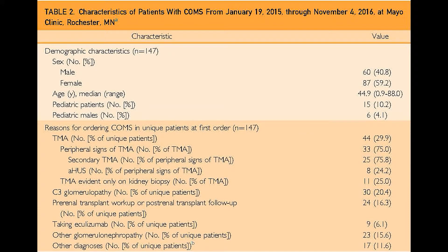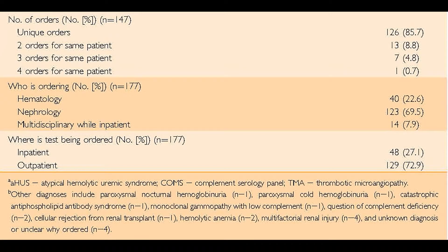Patients with TMA were grouped into having a diagnosis of secondary TMA or atypical hemolytic uremic syndrome. The most common reason for ordering the complement serology panel was for evaluation of TMA, and to differentiate complement-mediated TMA, or AHUS, from other secondary TMA. Out of the 147 unique patients shown in Table 2, 44 had complement serology panel for TMA. Eleven patients only had TMA evident on renal biopsy, while 33 had TMA with peripheral signs, meaning that they had evidence of thrombocytopenia and microangiopathic hemolytic anemia. Of patients with peripheral signs of TMA, eight patients met clinical criteria for diagnosis of AHUS, while 25 had a diagnosis of secondary TMA.